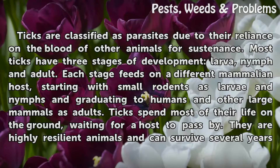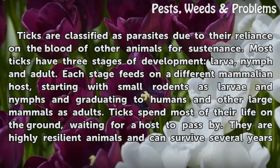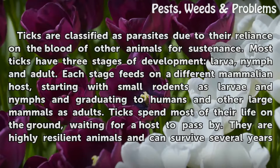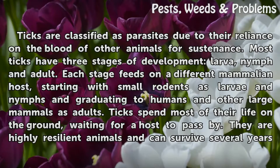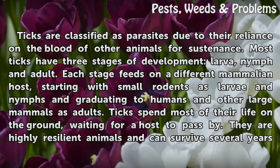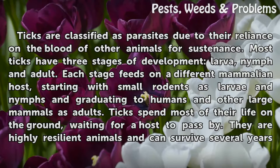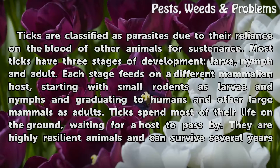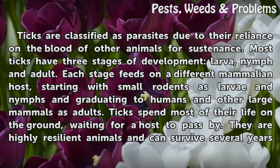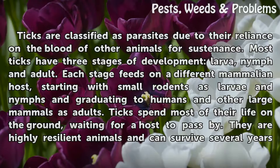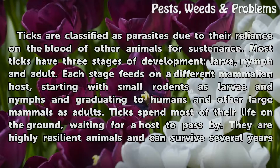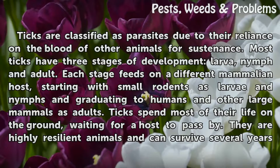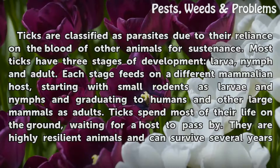Ticks are classified as parasites due to their reliance on the blood of other animals for sustenance. Most ticks have three stages of development: larva, nymph, and adult. Each stage feeds on a different mammalian host, starting with small rodents as larvae and nymphs and graduating to humans and other large mammals as adults.